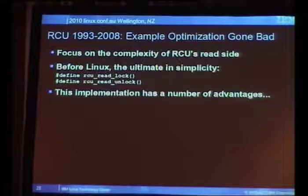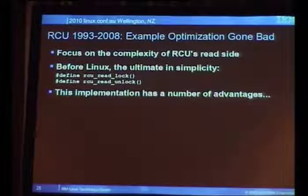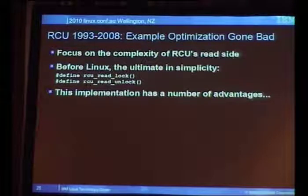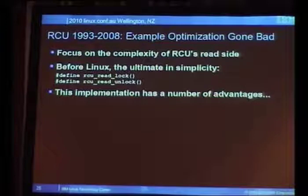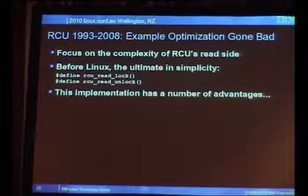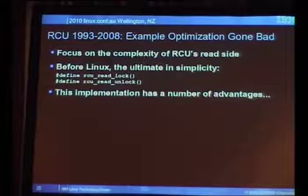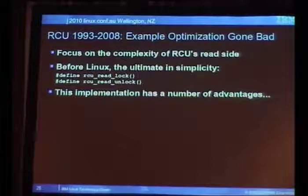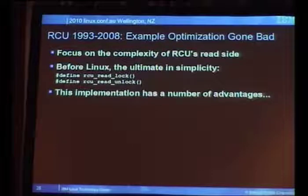Before Linux, this thing was really simple. I challenge you to make a primitive with a simpler implementation: #define rcu_read_lock() and #define rcu_read_unlock() — both empty macros, nothing more. This implementation has a number of pretty profound advantages from software engineering and a performance viewpoint.